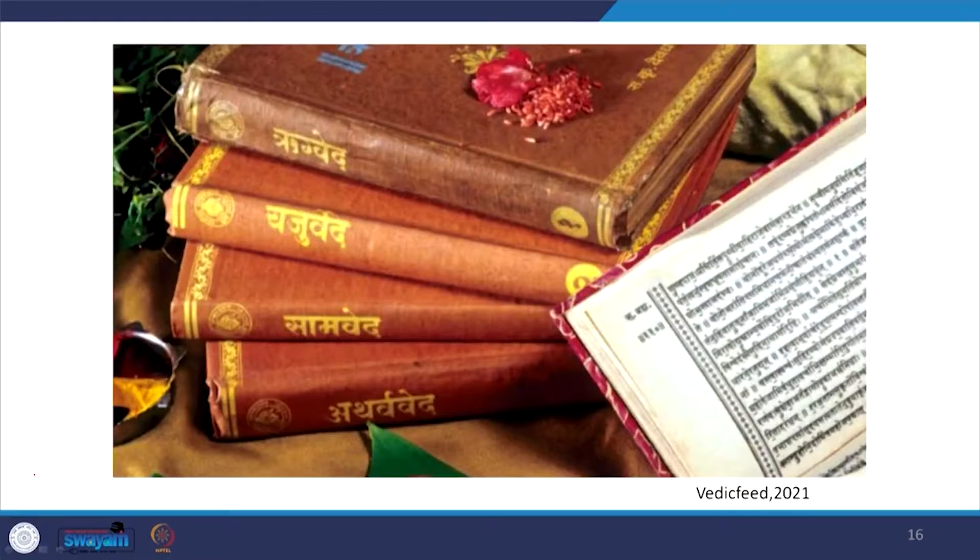The Vedas are the most ancient sacred scriptures of India. There are four Vedas: the Rig Veda which comprises of hymns and verses, Yajur Veda comprising of prayers and formula, Samaveda which comprises of melodies and chants, and Atharva Veda which comprises of spells and enchantments for the practice of magic. These Vedas have four supplementary Vedas which we call Upa Vedas. Among the four Upa Vedas, Sthapathya Veda deals with architecture.